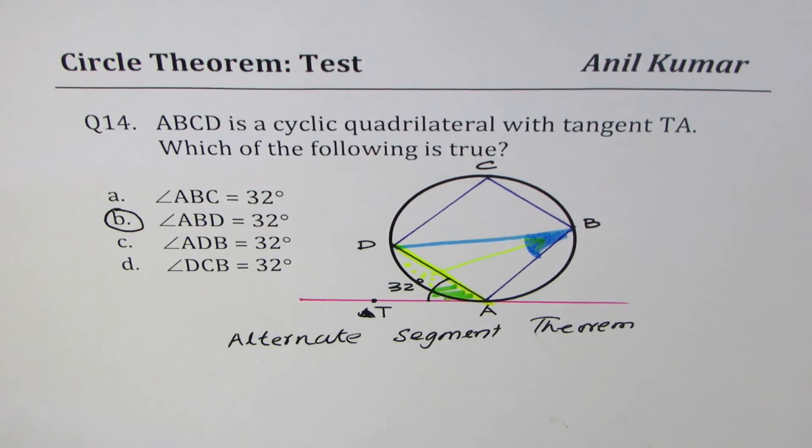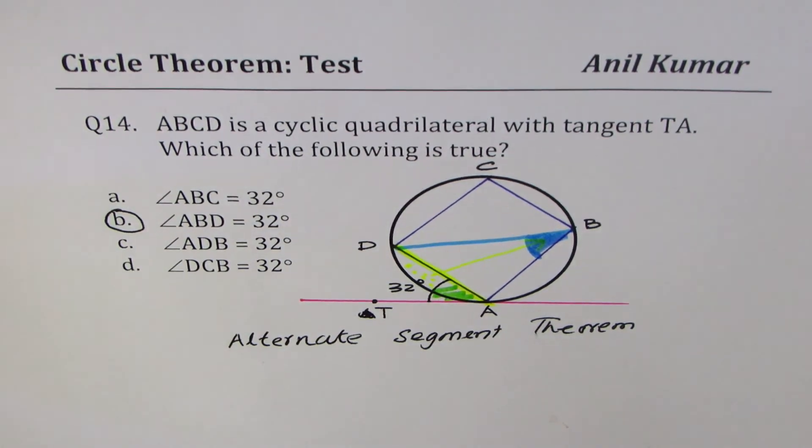That is how you can identify the angle which should be equal to the angle formed by the tangent and the chord. It is extremely important and I hope that helps. Feel free to write your comments and share my videos. Thank you and all the best.